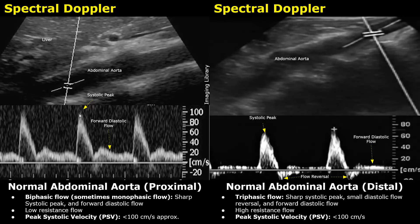The biphasic flow has two components: a sharp systolic peak, which is the first component, and the second component is the forward diastolic flow. Because of these two components, it is called a biphasic flow. This biphasic flow is seen when there is low resistance to blood flow. The proximal aorta has a low resistance flow.